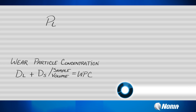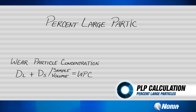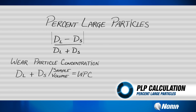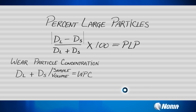The second piece of information we can calculate is called the percent large particles, or PLP. This calculation takes the absolute value of ferrous large minus ferrous small, divided by ferrous large plus ferrous small, then multiplied by 100 to get the percent large particles.